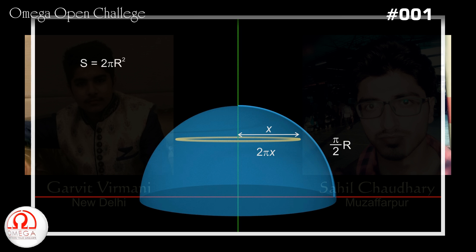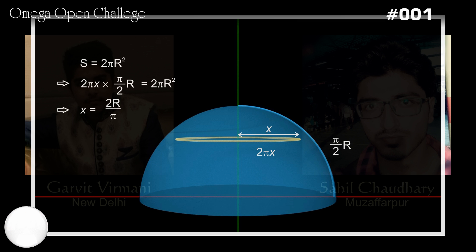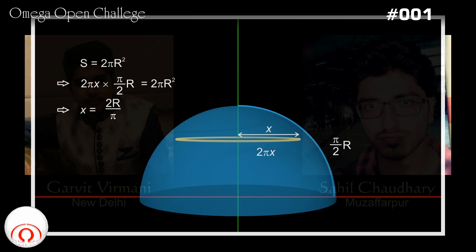As per the Pappus Centroid Theorem, the distance travelled by the centroid multiplied by the length of the ring must equal the surface area of the hemisphere. Putting in the values, we get 2 pi x into pi by 2 r equals 2 pi r squared. Simplifying, we get x equals 2r by pi. From symmetry, the x and y coordinates of the center of mass are equal. Therefore, the position of the center of mass is 2r by pi, 2r by pi.